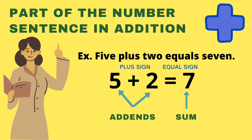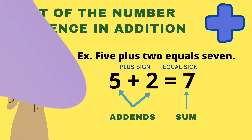Let us review the parts of the number sentence in addition. The two numbers being added are called addends. This is the plus sign, equal sign, and the answer is called sum — it is also called total. For example: five plus two equals seven. Five and two are the addends, and the sum is seven.